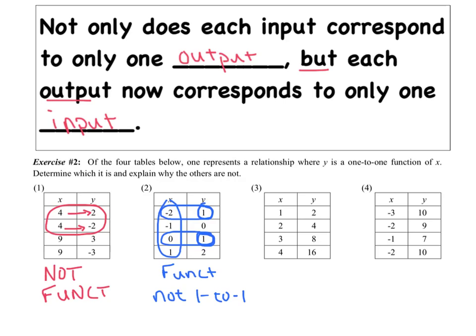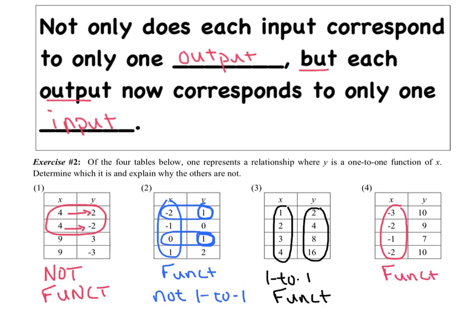On the third table, every x value is unique and every y value is also unique — that fits our definition perfectly. Not only did the inputs correspond to one and only one output, but the outputs corresponded to one and only one input. So this is not only a function, but it is a one-to-one function — our big winner for the day. On the fourth table, all x values are unique so it is a function. However, the y value 10 is repeated, which makes it not one-to-one.